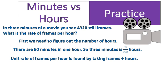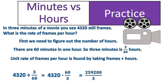We're going to find the unit rate of frames per hour by dividing frames by hours, just like we did before. The number of frames — 4,320 — divided by 3 sixtieths, which is our hours. We multiply by the reciprocal, so 4,320 times 60 over 3 gives us 259,200 over 3, or 259,200 divided by 3, which leaves us with 86,400. That's how many frames are shown in every hour of movies, at 24 frames per second — not the fastest frame resolution, but pretty decent.